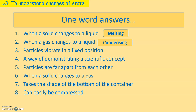Number three: particles vibrate in a fixed position — what do we call that? The answer is solid. When particles vibrate in a fixed position, they are known as a solid. That is the state of matter of that particular particle or object.